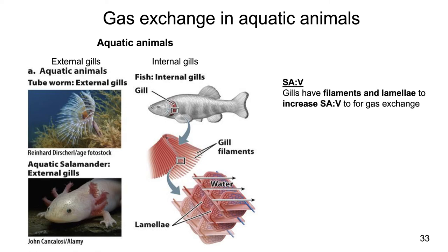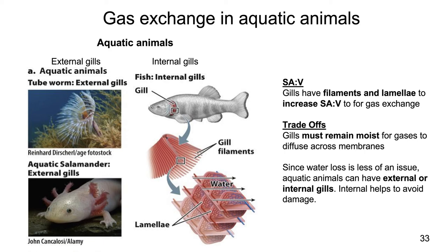A couple of themes: gills have filaments and lamellae to increase their surface area to volume ratio for gas exchange. There are also trade-offs — gills, like any membrane, have to remain moist for gases to diffuse across them. Since water loss is less of an issue for aquatic animals, some can have external gills like tube worms or salamanders, while others have internal gills. Internal gills have typically evolved to help avoid damage — having them internal protects them from being beaten up, which is important for fast-moving animals like fish.